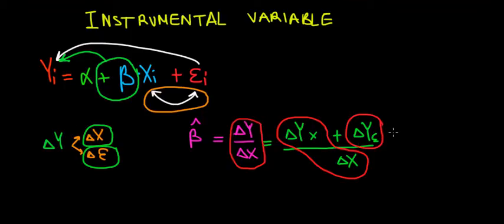So in other words, if we write the math, what we have is that this is the slope coefficient. This is the beta that we're trying to estimate, but we're left with the change in Y due to the error term when we increase X.